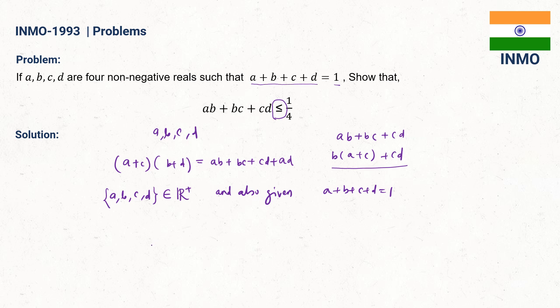Now what we will do? We will write an expression with A plus C and B plus D as AM and GM inequality. Let's write that AM greater than GM using A plus C and B plus D as two positive reals.